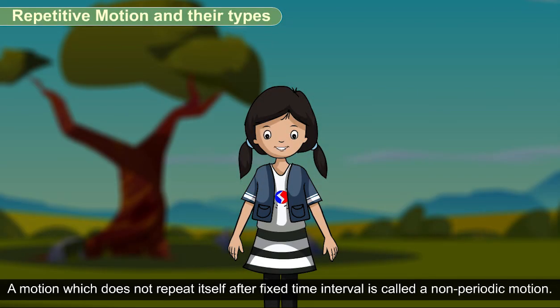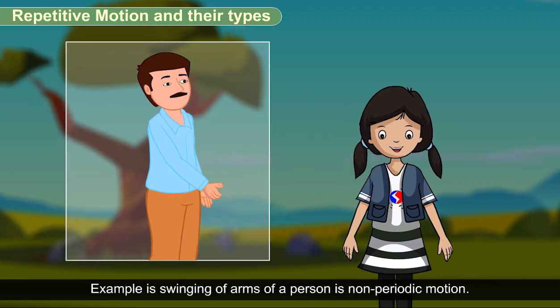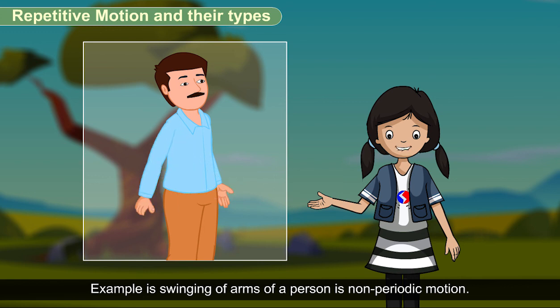A motion which does not repeat itself after fixed time interval is called a non-periodic motion. Example is swinging of arms of a person is a non-periodic motion.